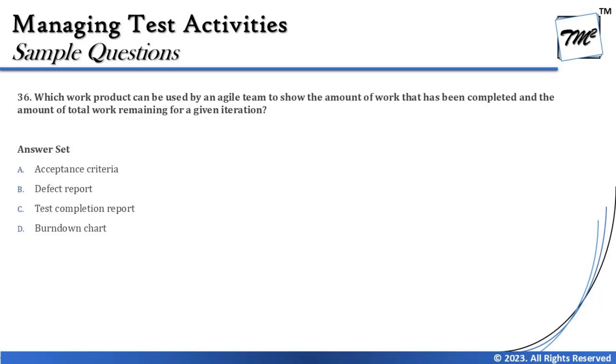The next question we have is Question 36: Which work product can be used by an agile team to show the amount of work that has been completed and the amount of total work remaining for a given iteration? For such questions, it's very crucial and important that you have a good understanding of the reporting matrices from the syllabus.